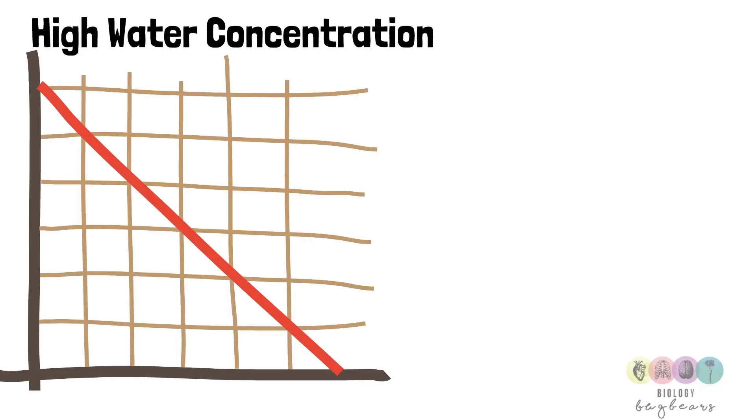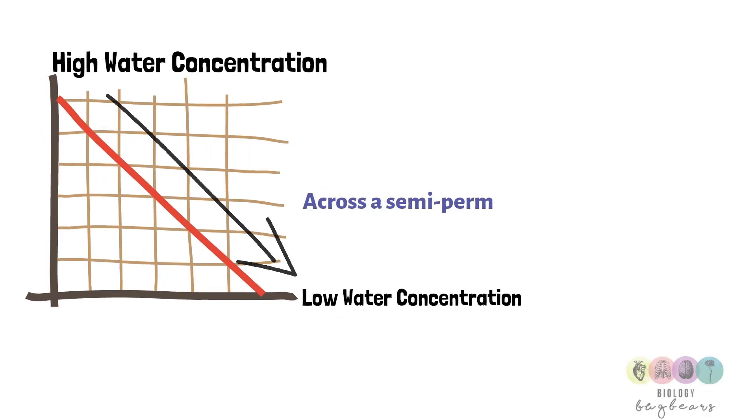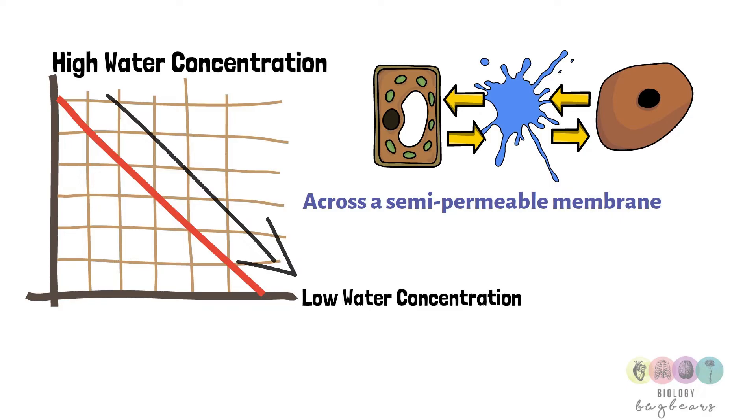So water is going to move from an area of high water concentration, lots of it, to where there is less of it, an area of low water concentration across a semi-permeable membrane like in plant and animal cell membranes.